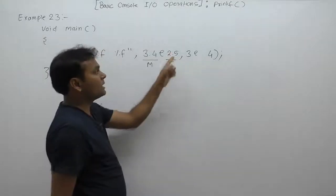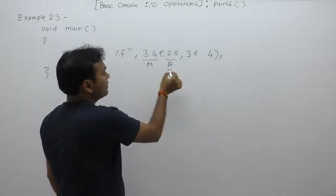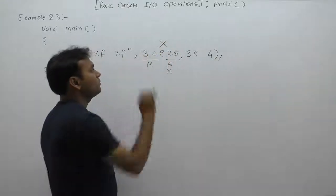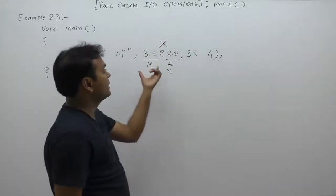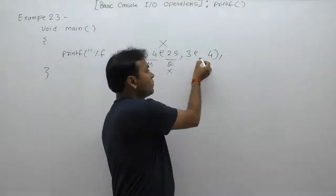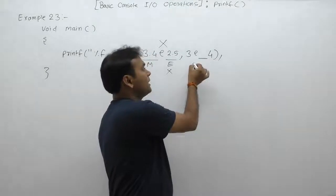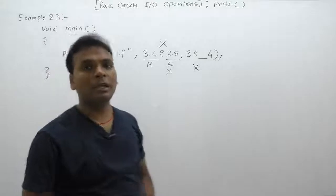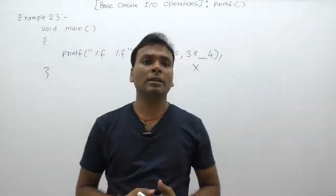We cannot supply a decimal point inside the exponent. Therefore, it is an invalid representation of floating point in exponent form. Again, space is not allowed inside floating point representation or exponent representation. These two rules must be satisfied compulsorily.